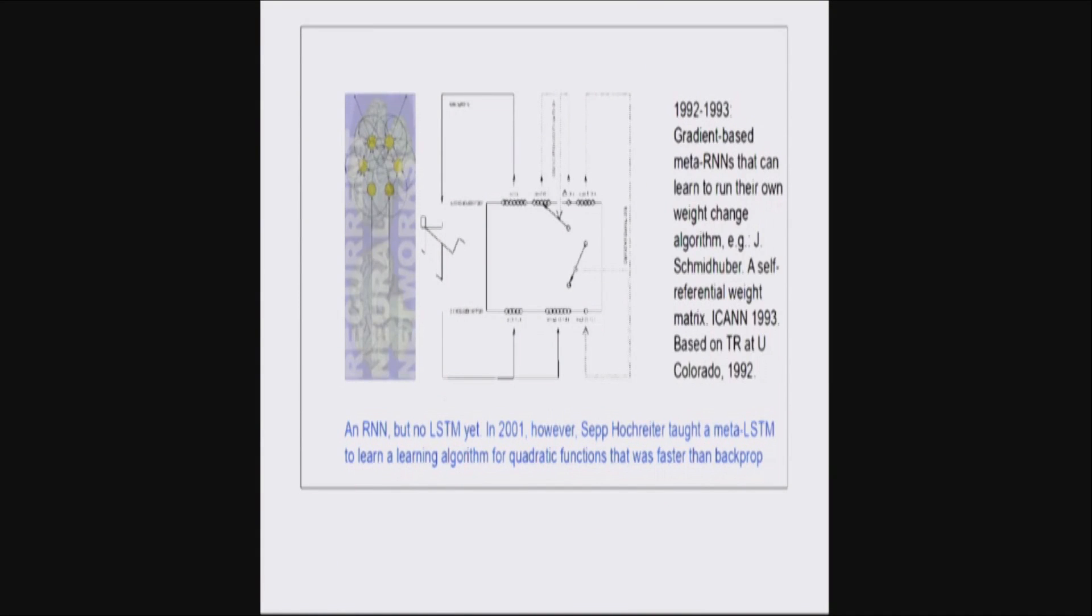Here is a real meta learning system, at least a supervised meta learning system, not fully general, not reinforcement learning, but at least self-referential. This is from 1992, also 1993. You have a recurrent network and you want to make it self-referential such that it can run arbitrary learning algorithms on itself. So, we know that a recurrent network can run arbitrary algorithms, including learning algorithms, but we have to set it up such that it really can express this power.